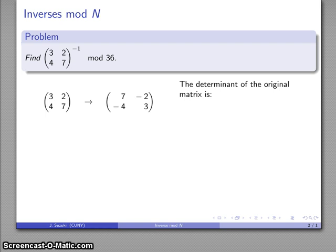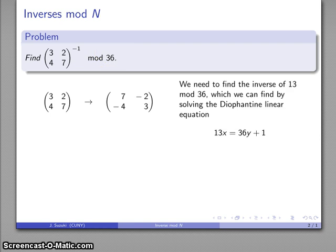So we find our determinant first. So our original matrix, 3, 2, 4, 7, has determinant 13. And we're in luck. 13 does have a multiplicative inverse mod 36. We just have to find it.